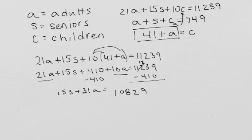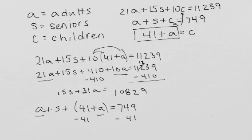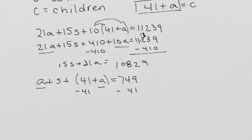So we've simplified this equation, so now we can go ahead and look at the other equation. We have A plus S plus, instead of the C, 41 plus A equals 749. Combining like terms and subtracting 41 on each side gives us 2A plus S equals 708.